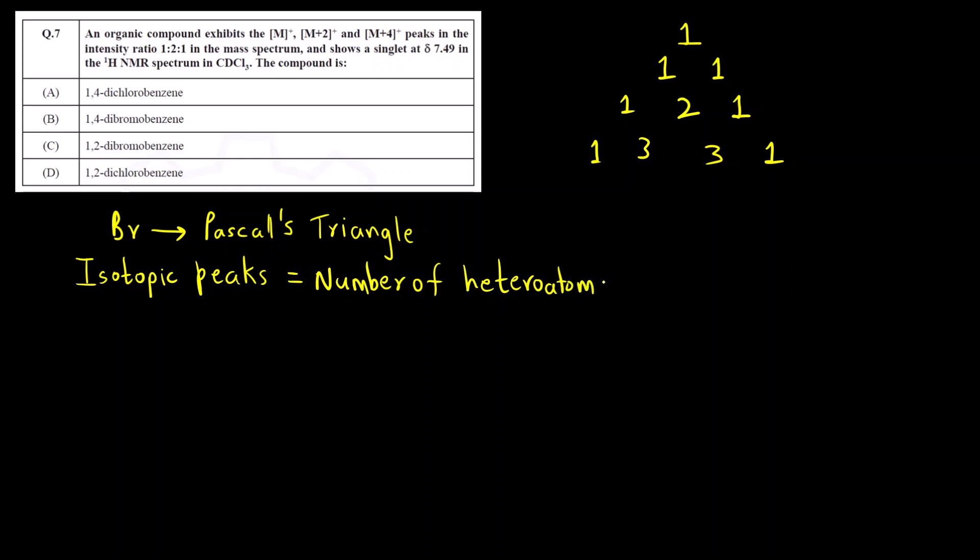In all the options you can see it is 1,4-dichloro, 1,4-dibromo, dibromo, dichloro. That means there are two heteroatoms. So there will be two isotopic peaks - one is the molecular ion peak M+, isotopic peak M+2, and another M+4 peak. You can see this ratio is given 1:2:1. Here it is 1:2:1. This is for bromine.